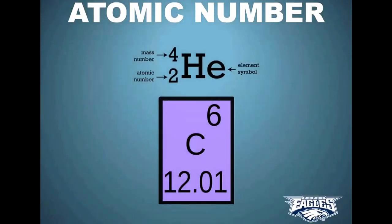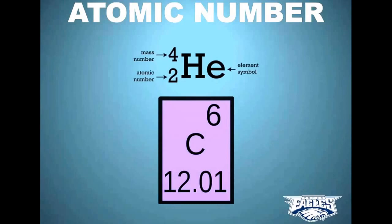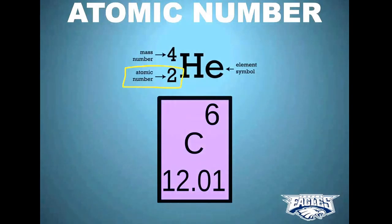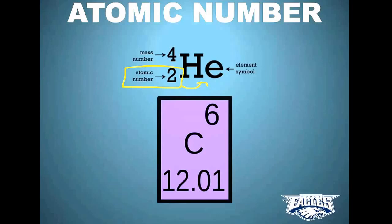The periodic table also tells us the atomic number of an element. The atomic number is actually the identity of an element — it's the number of protons. The atomic number is the number of protons, and that is what determines the identity of an element. The atomic number of helium is two, and that's what makes helium helium, because it has two protons. If I take a proton away, it becomes hydrogen — it's no longer helium anymore.